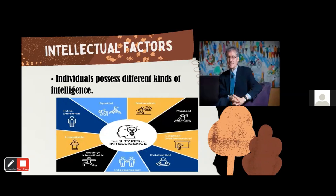Experts state that individuals possess different kinds of intelligence. Howard Gardner proposed multiple intelligences — we have nine types. First is intrapersonal: students have the ability to understand their inner feelings and self-realization. Then visual or spatial: students excel in shape, design, graphics, and visualization.